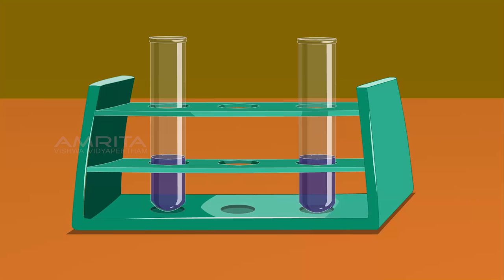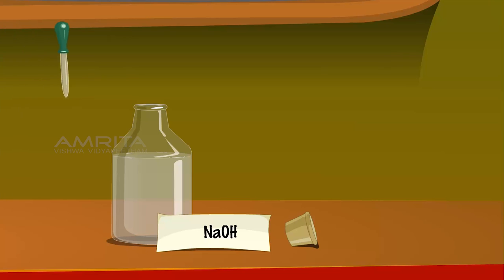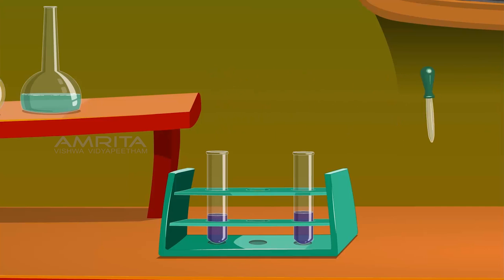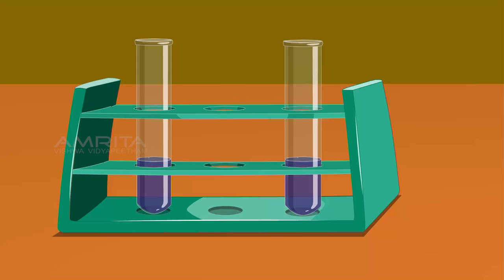NaOH is an alkali with a pH more than 7. Take a few drops of NaOH solution from its bottle using the dropper and add it to the test tube containing the blue litmus solution. The colour of the solution remains the same.